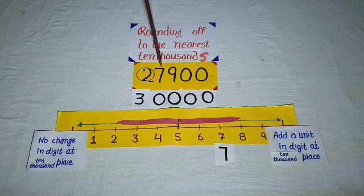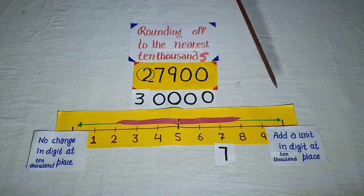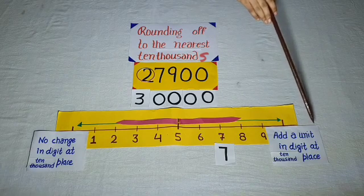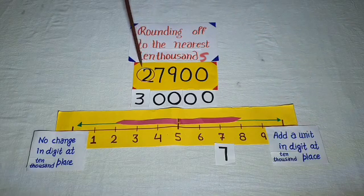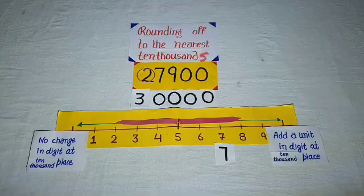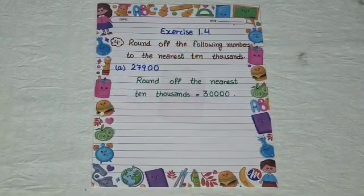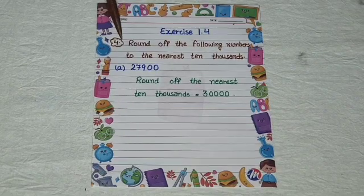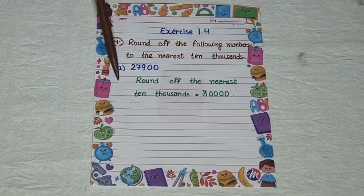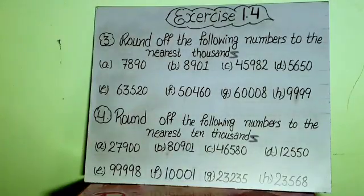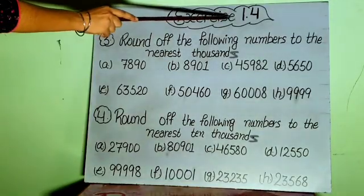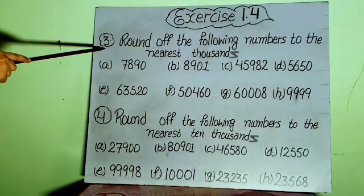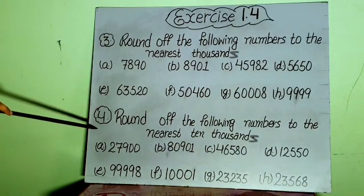Look at the thousandths digit. If it is five to nine, add a unit to the ten-thousandths digit. Now write the fourth statement in your notebook like this and solve the sum. Dear students, the remaining parts from exercise 1.4, statements three and four — do them yourself in your notebook. Thank you.